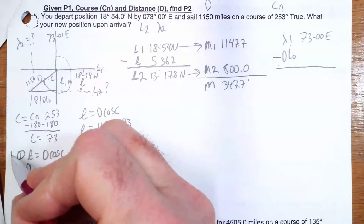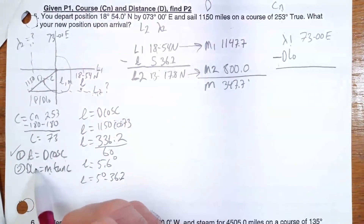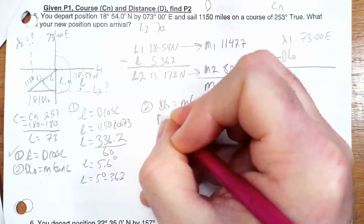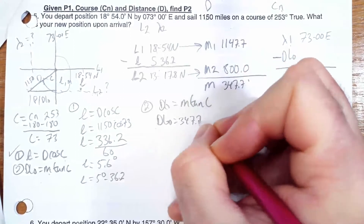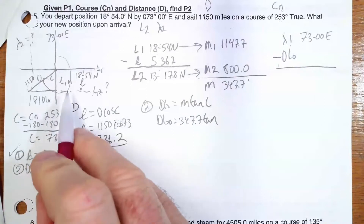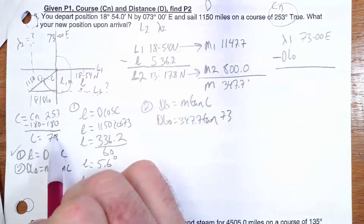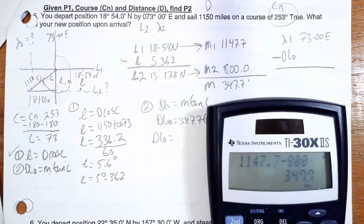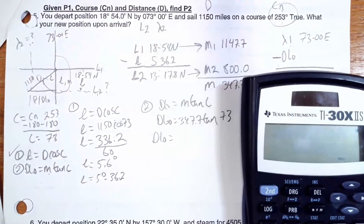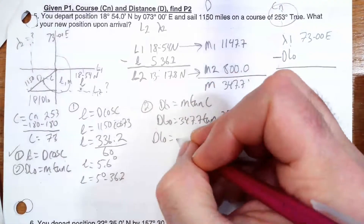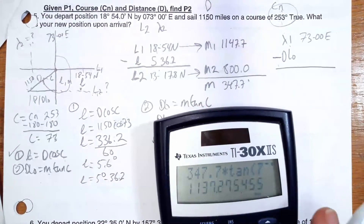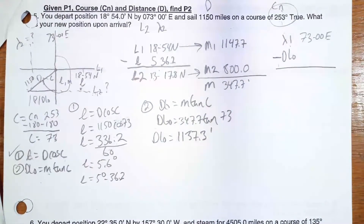Now I have my M and my C, so I'm ready for formula two. D-low equals M tan C. D-low equals 347.7 times tangent of 73 — using C, not CN. That gives D-low equals 1137.3 minutes.